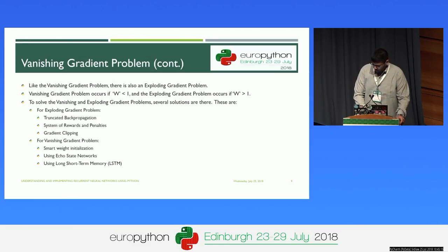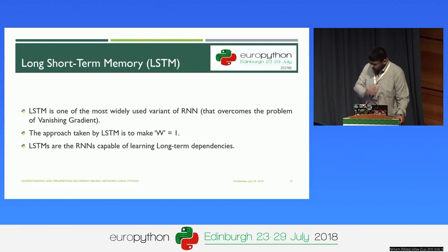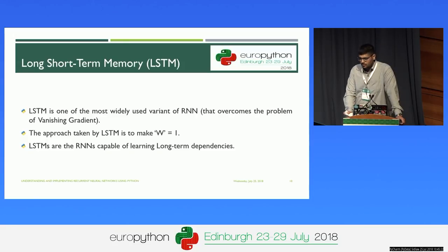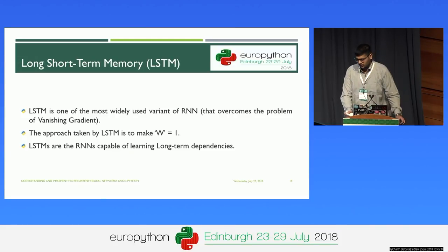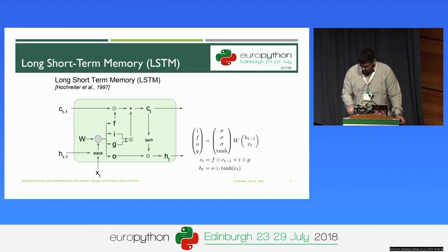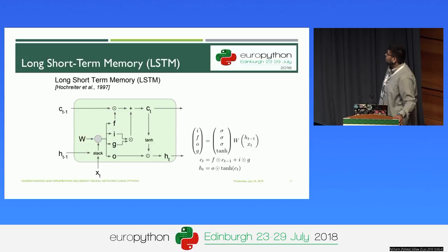LSTM, that is Long Short-Term Memory, is one of the most used variants of RNN. The approach for LSTM is making the weight W equal to 1 — so you are not having W less than 1 and not having W greater than 1. We simply make W equal to 1.